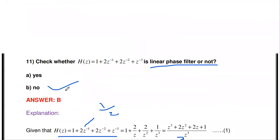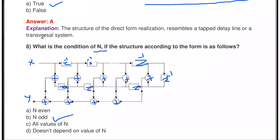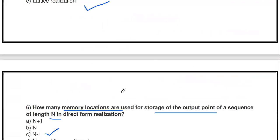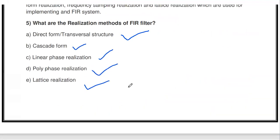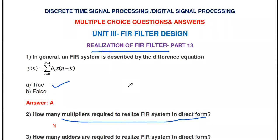These are some of the questions about the realization of FIR filters. There may also be diagram questions about the transversal or direct form realization for a given H(z). Thanks for watching — please subscribe to my channel for more videos. All MCQ videos are available in the DTSP (Discrete Time Signal Processing) playlist, and remaining video links are in the description box.